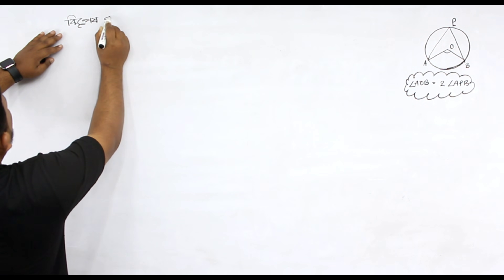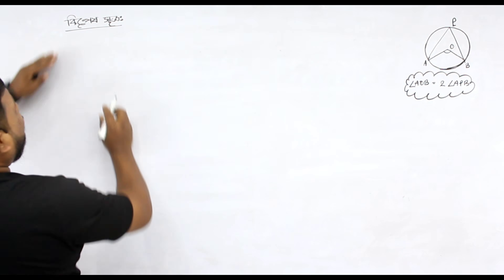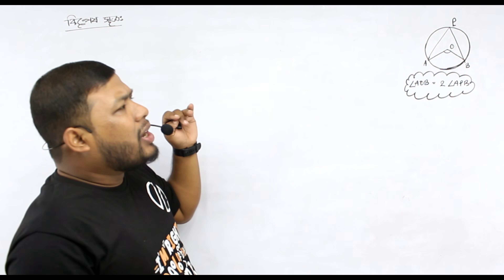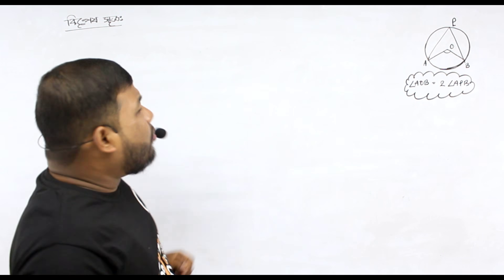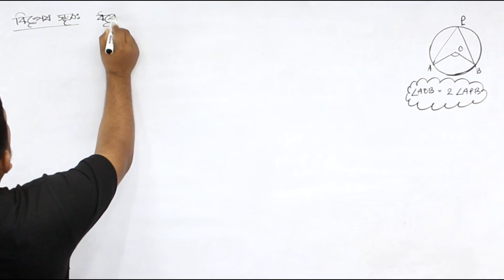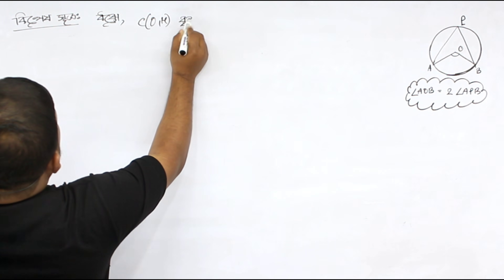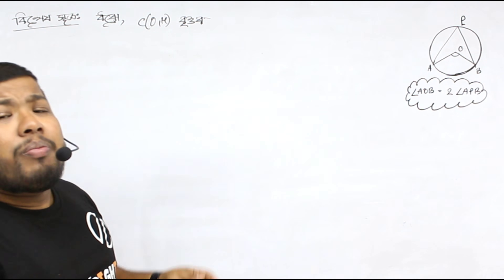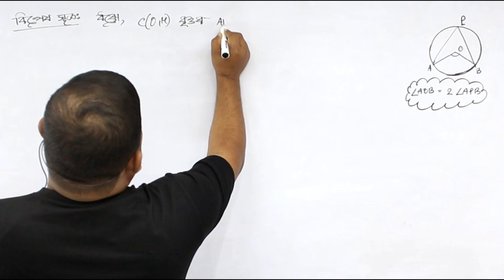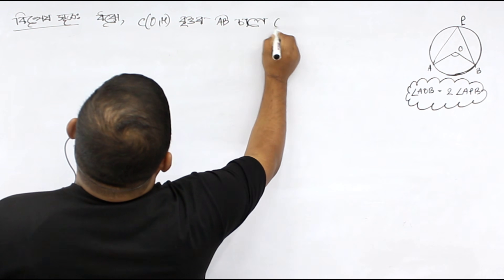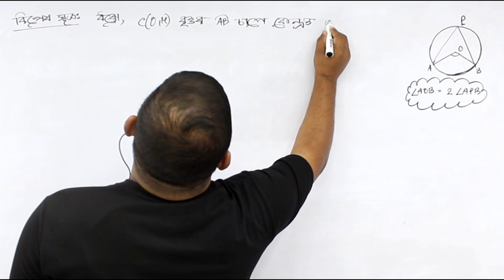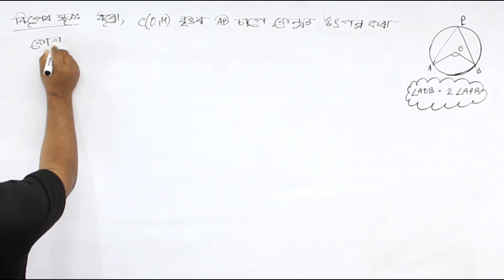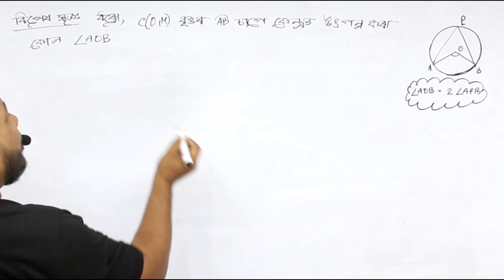Re-statement: we will write the general statement using geometric terms. Circle C(O,r) — we will denote C as circle, O as center, r as radius. Arc AB forms angle AOB at the center. P is any point on the other arc of the circle. The angle APB is the inscribed angle. We need to prove angle AOB is equal to twice angle APB.